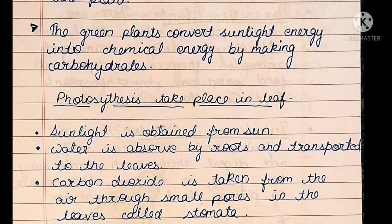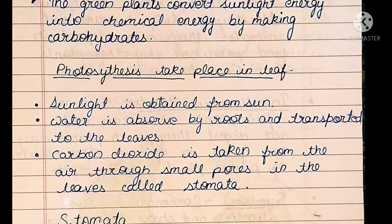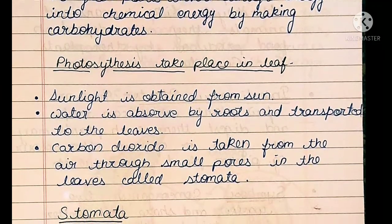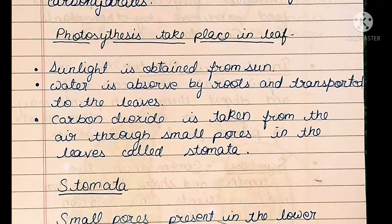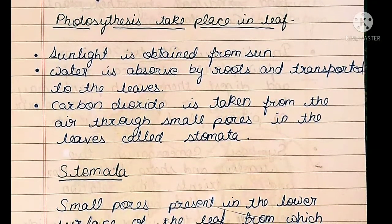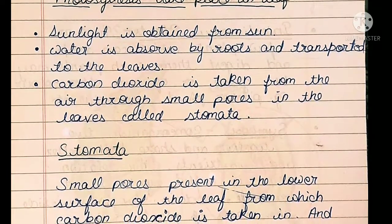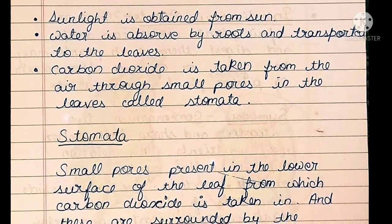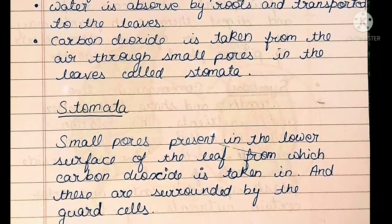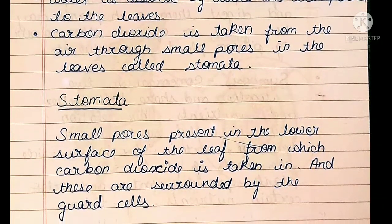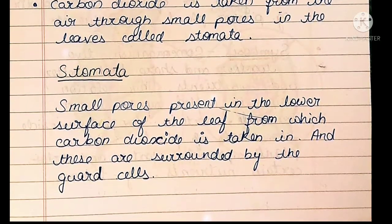Photosynthesis takes place in the leaf. Sunlight is obtained from the sun. Water is absorbed by roots and transported to the leaves. Carbon dioxide is taken from the air through small pores in the leaves called stomata. Stomata are small pores present on the lower surface of leaves through which carbon dioxide is taken in, and they are surrounded by guard cells.